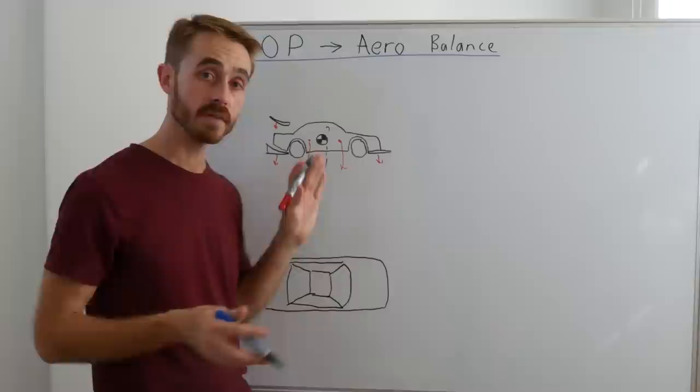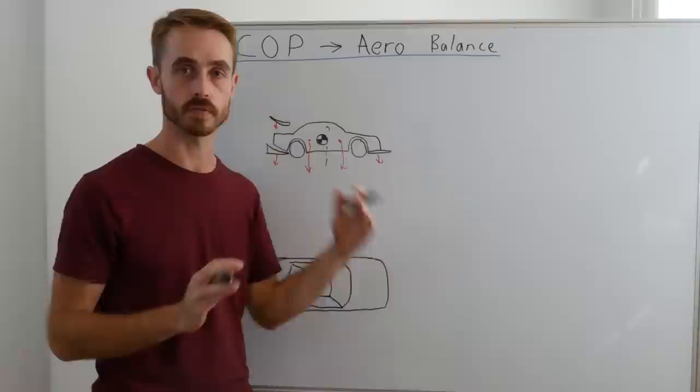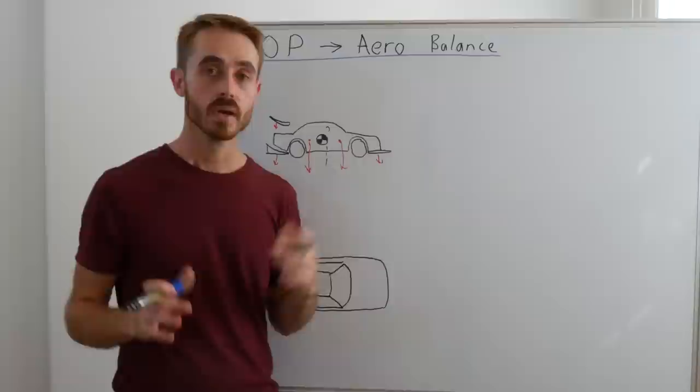If our car was experiencing high speed understeer, we'd want to shift our center of pressure forwards. If it's experiencing high speed oversteer, we'd want to shift it rearwards. But like all this aerodynamic stuff, it's never quite as simple as that.